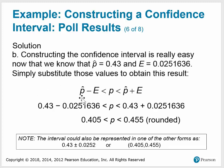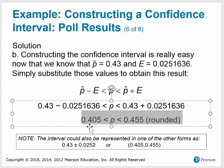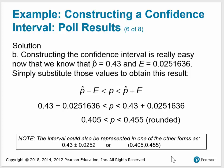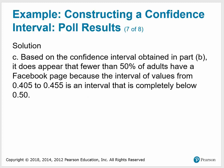To write the interval, we take P-hat = 0.43 and subtract E, then P-hat plus E. The finished interval is 0.405 < P < 0.455, rounded to three significant digits. Based on this confidence interval, it does appear that fewer than 50% of adults have a Facebook page because the interval from 0.405 to 0.455 is completely below 50%.